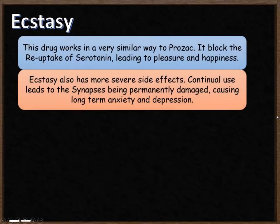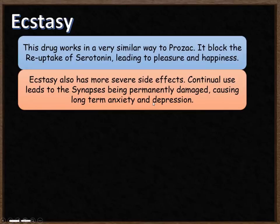There are two more drugs to know about. The first is ecstasy, which works in a very similar way to Prozac in that it blocks the reuptake of serotonin in the synapses of the brain, leading to feelings of happiness and pleasure. However, ecstasy also has more severe side effects. Continual and prolonged use leads to the synapses being permanently damaged, meaning they don't detect serotonin properly, causing long-term anxiety and depression.